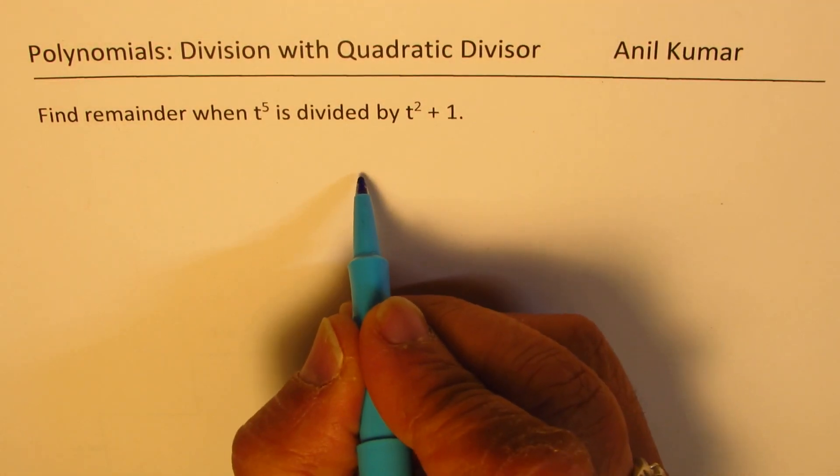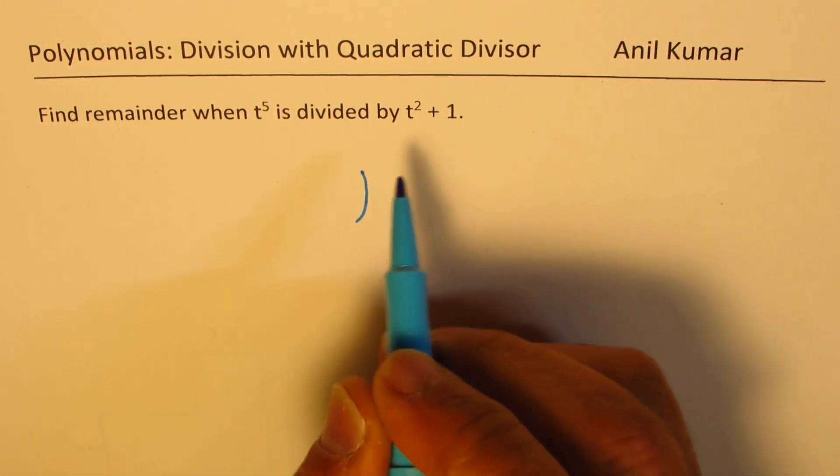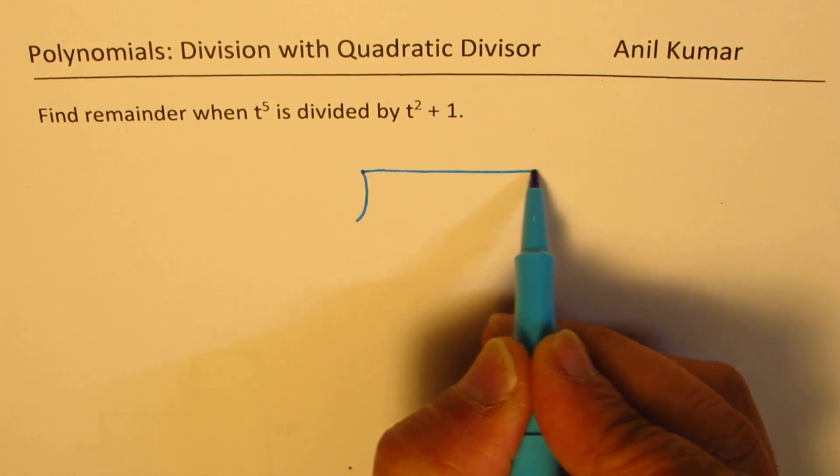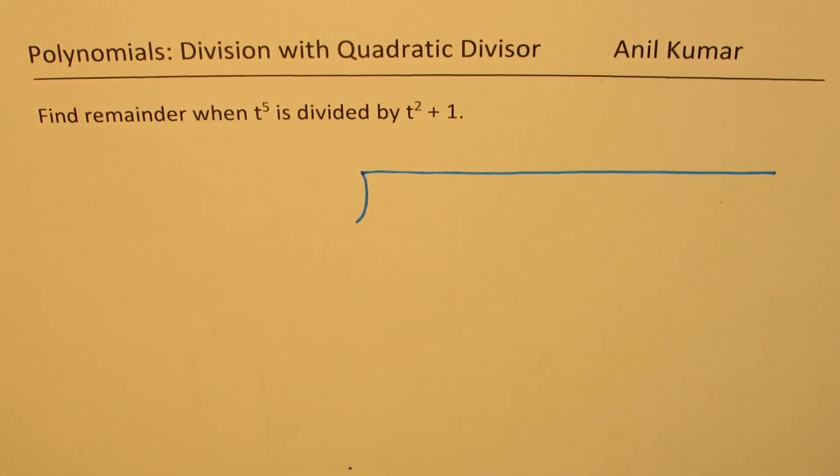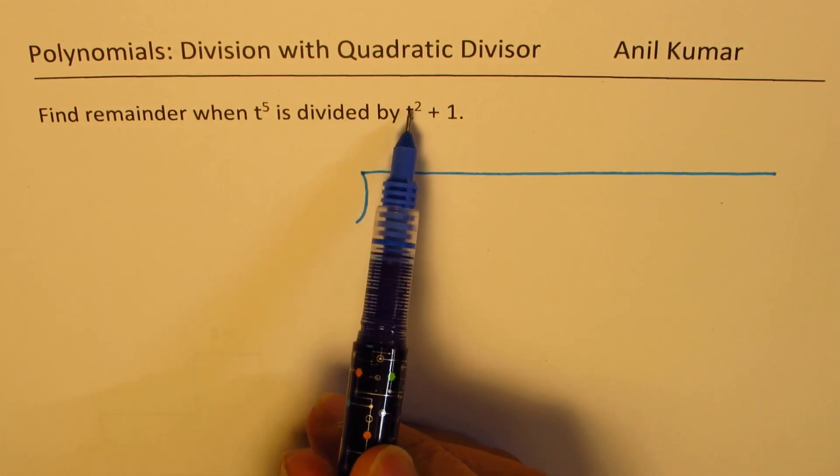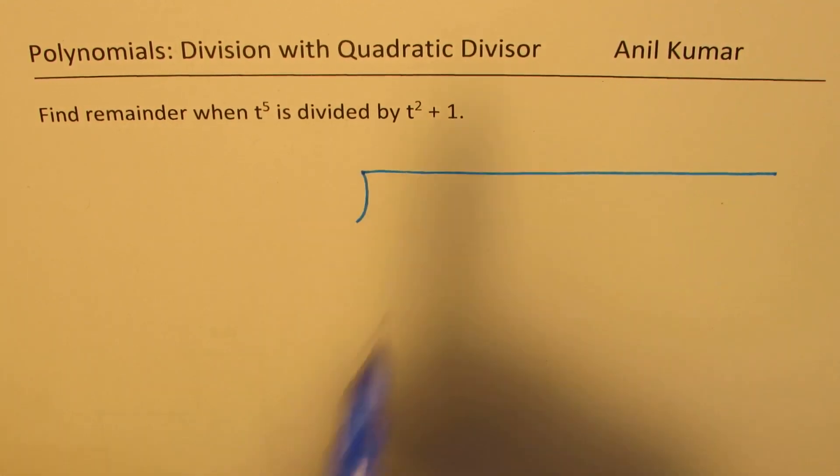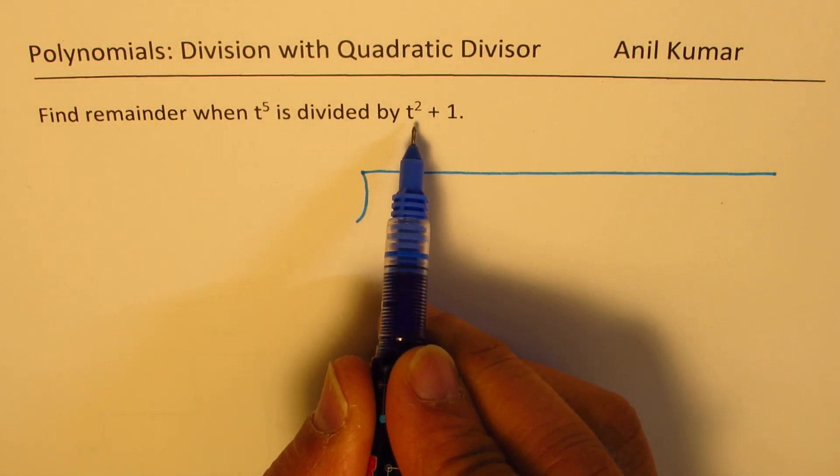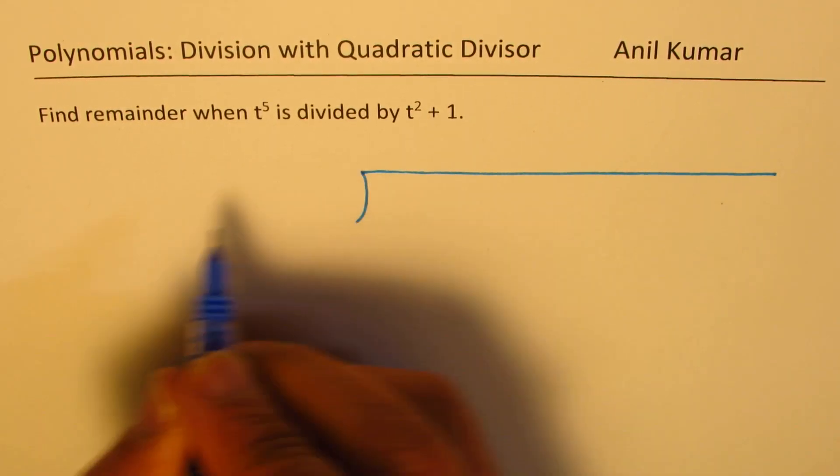So the question looks simple but it has many tricks involved. Let's perform long division to find the remainder. So when we say t to the power of 5 is being divided by t squared plus 1, we need to introduce the placeholders, right? So that is the key.